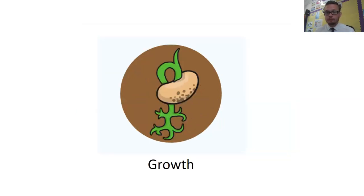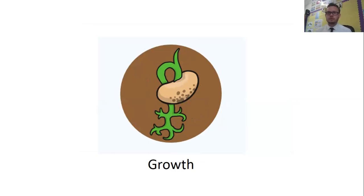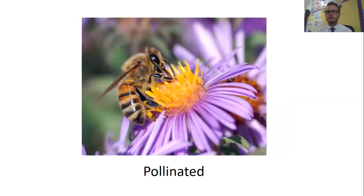Then they start to grow. Hopefully some of your beans will look really good — you could see the roots growing out into that paper towel or kitchen roll and starting to feed down. Maybe you've been inspired by this and you've actually started to grow your own plants at home. Once they grow, then they flower. The flower then produces pollen and as a result becomes pollinated.